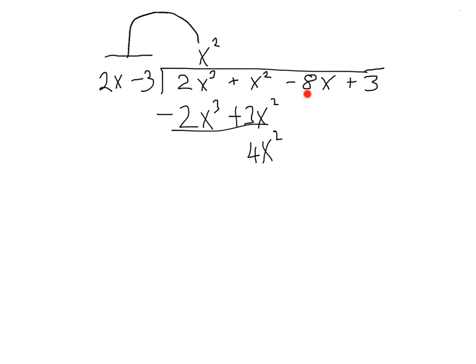Our next step is to drag down the -8x. I usually draw in a little arrow for this - it helps with pattern recognition and tells me we're at the end of the pattern. Once you see the arrow, that tells you to go back to the start and do what you did at the start. We divided 2x into 2x³, now we divide 2x into 4x².